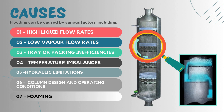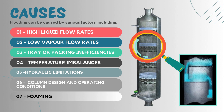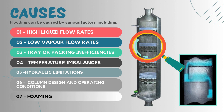The third factor is tray or packing inefficiency. Inefficient trays or packing can lead to uneven distribution of liquid and vapor within the column, causing flooding. Issues such as tray fouling, damage or misplaced trays, improper tray or packing design, or inadequate tray spacing can all contribute to this problem.